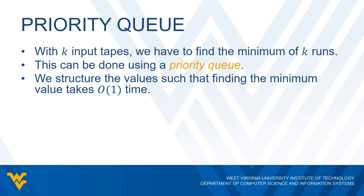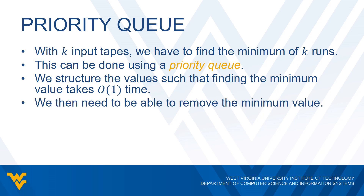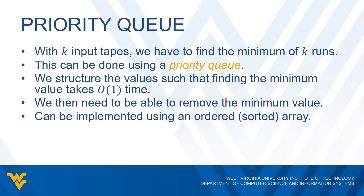There are different ways that we can implement a priority queue, but we're saying we can structure our data such that finding the minimum value takes constant time, and we then need to be able to remove that minimum value. We can use an ordered or sorted array, or we can use what's called a tree. We'll be talking a lot more about trees in our data structures course. So we can use this priority queue data structure for dealing with multiple runs and merging them.